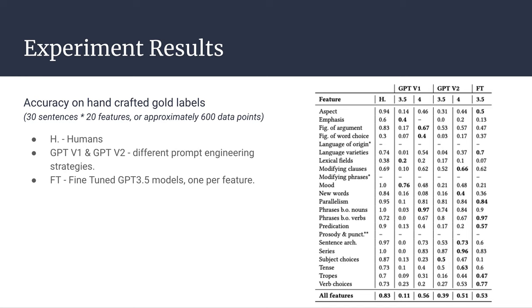We show that we can achieve results on par with GPT-4 at 10 times less the cost than GPT 3.5, and we achieve close to human accuracy on some features at 90 times less the cost.